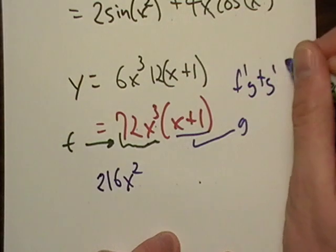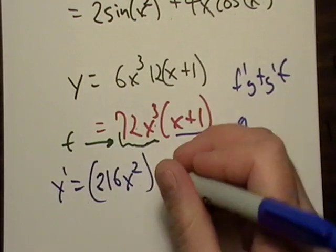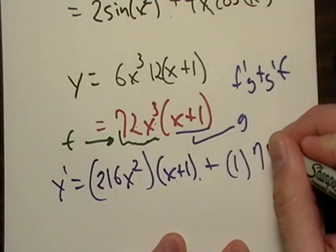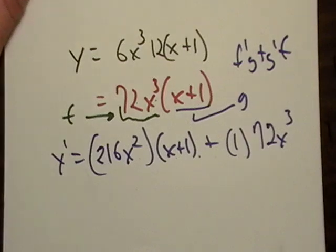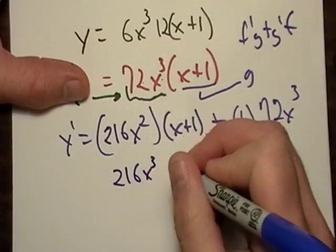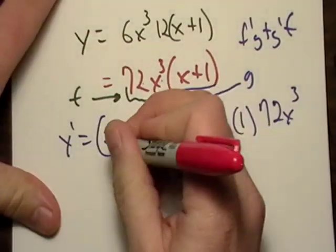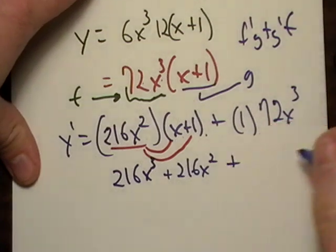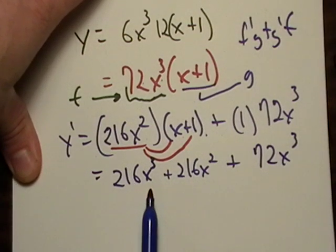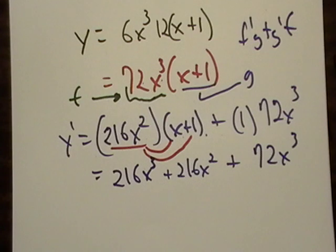So I got that, you gotta write your y prime there, times regular g which is just x plus 1, plus g prime which looks like that's just 1 times regular f. So what did we end up with? I just did distributive property, I just took this and multiplied it in, plus 72 x to the third. It looks like I can add these together and that's going to be 288 x to the third, yeah 288.